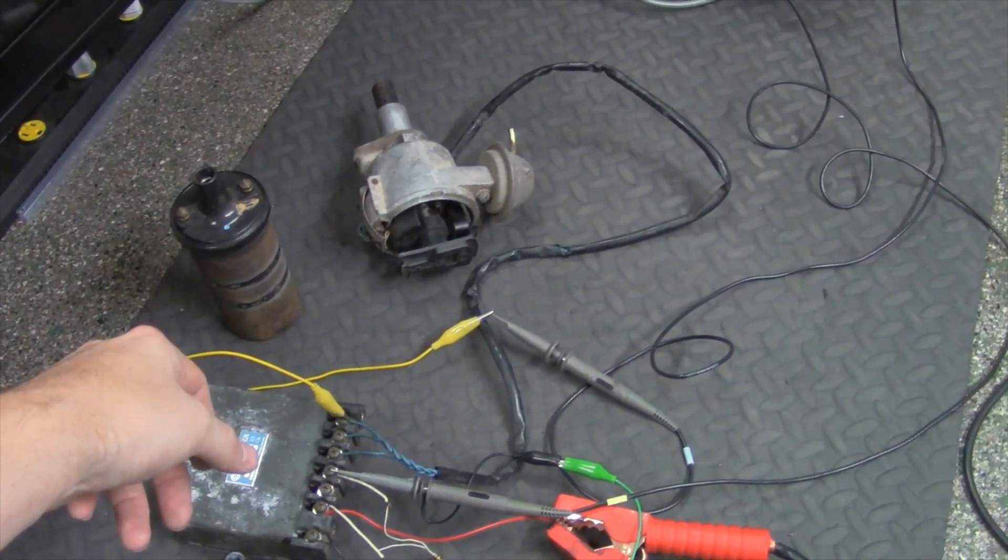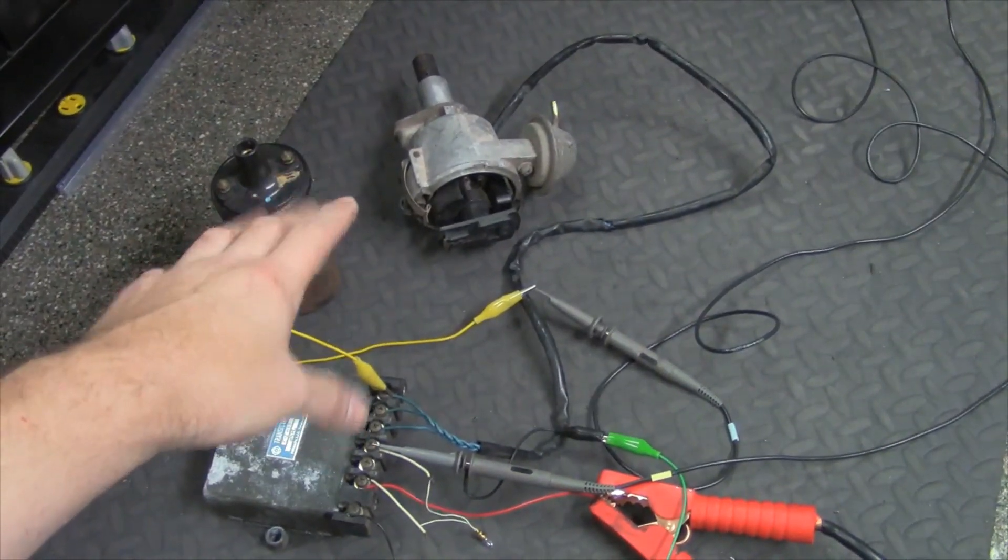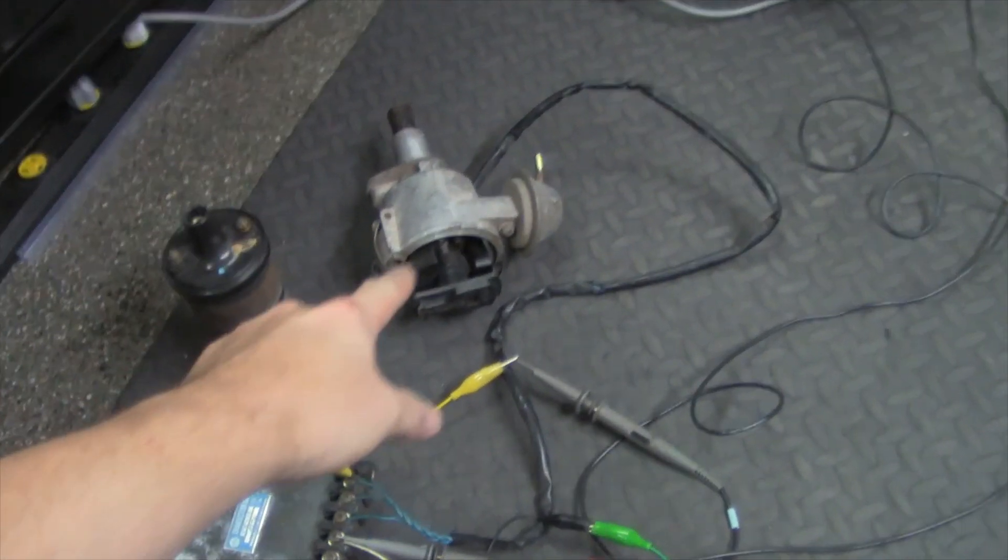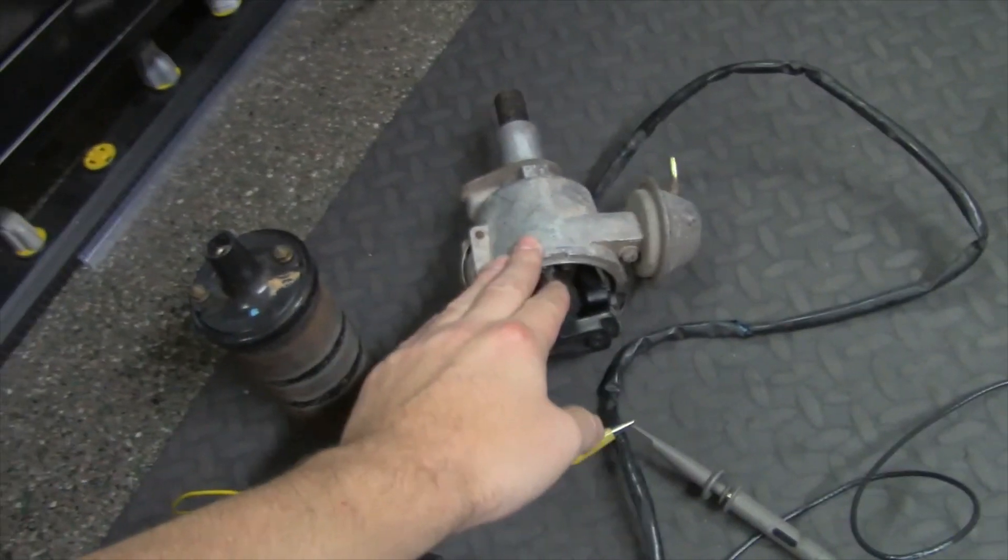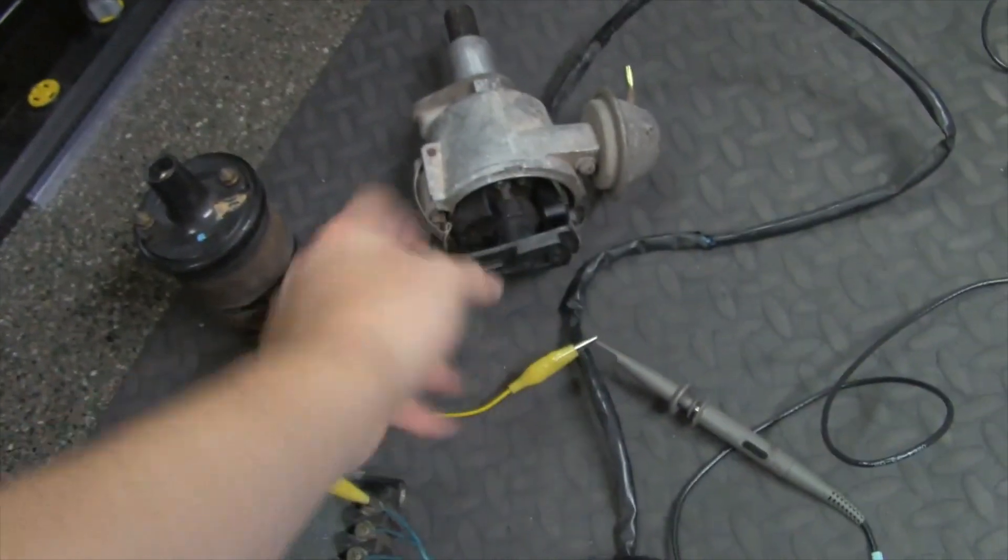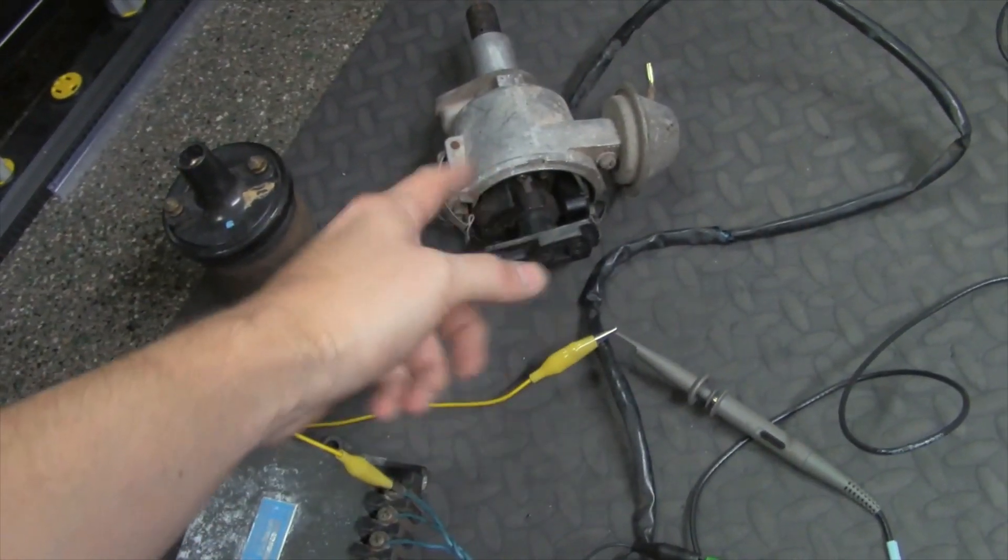Well, basically what it was, is before you had electronic ignition, these points went inside your distributor. So this is actually the distributor here. Typically you'd see this thing with a cap on it, and you'd see the spark plug cables coming out of it.